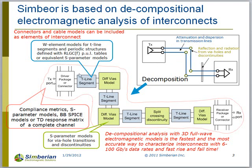Models for planar transmission lines and vias and other planar discontinuities are built with the electromagnetic analysis in Symbior. External S-parameter models can be used for connectors, cables, and packages. All models are united in Symbior to compute compliance metrics in frequency and time domains, or to produce S-parameters of broadband SPICE macro models of the data link for further analysis.